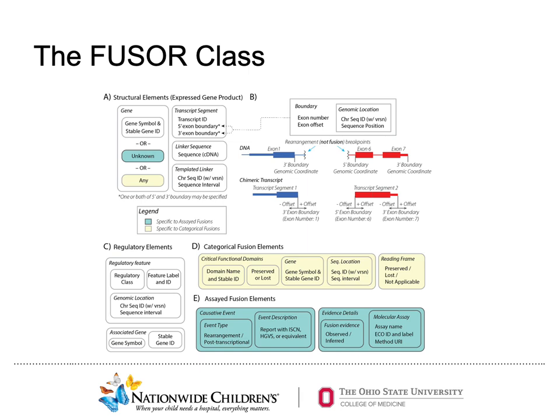Here you can see a figure describing features underlying the Fuser class, a novel data structure whose features were informed by the framework previously described. An important takeaway is that Fuser allows for the representation of both assay fusions and categorical fusions. Categorical fusions essentially describes fusions with shared characteristics, such as N-track fusions. The Fuser class allows for fusions to be represented in both clinical and research-based contexts, respectively.